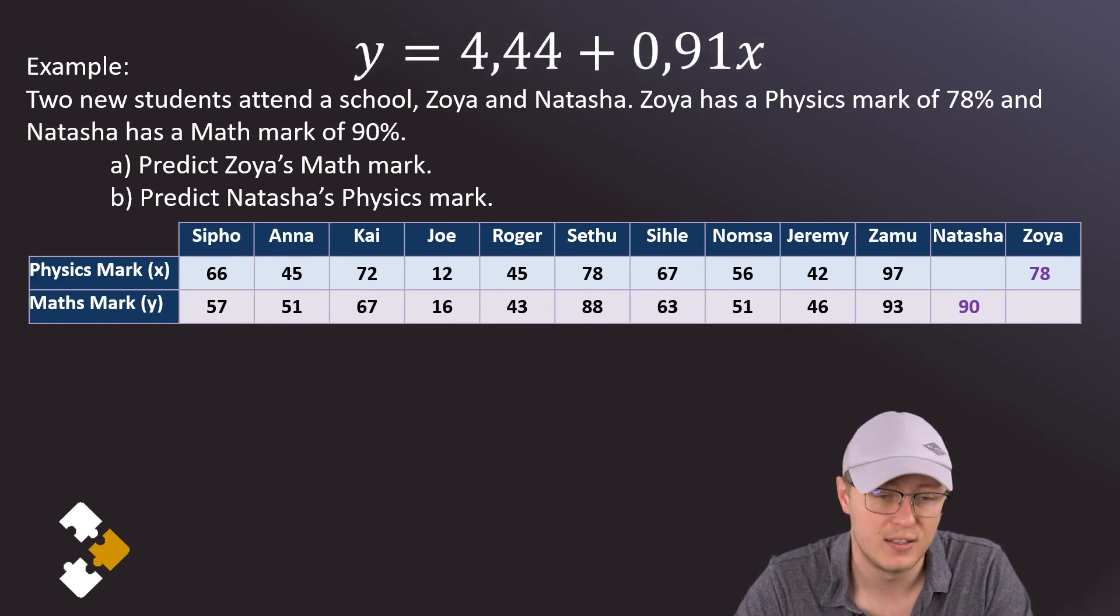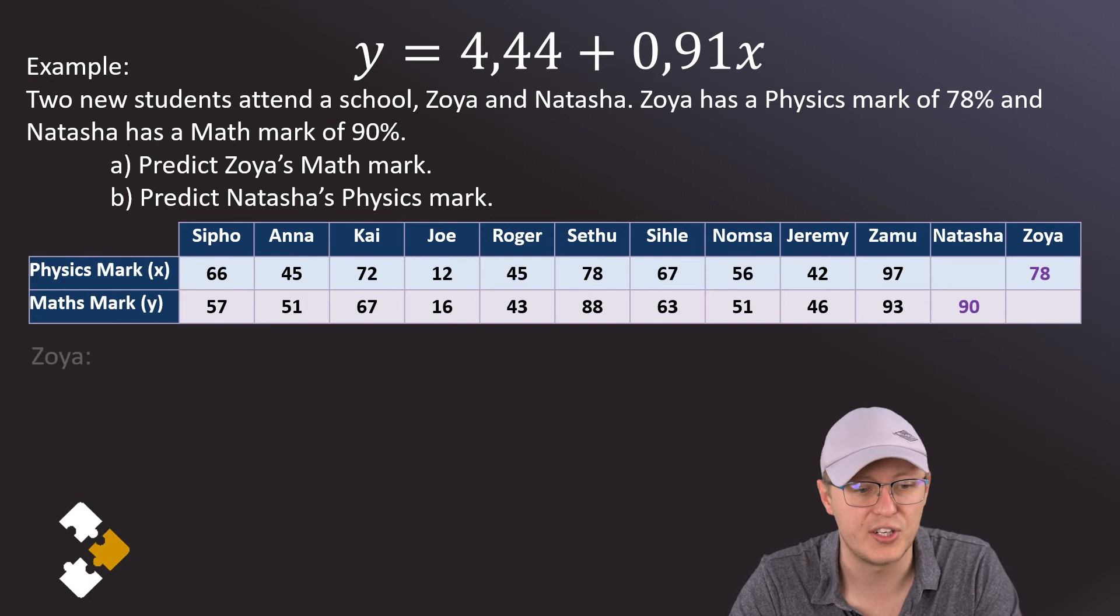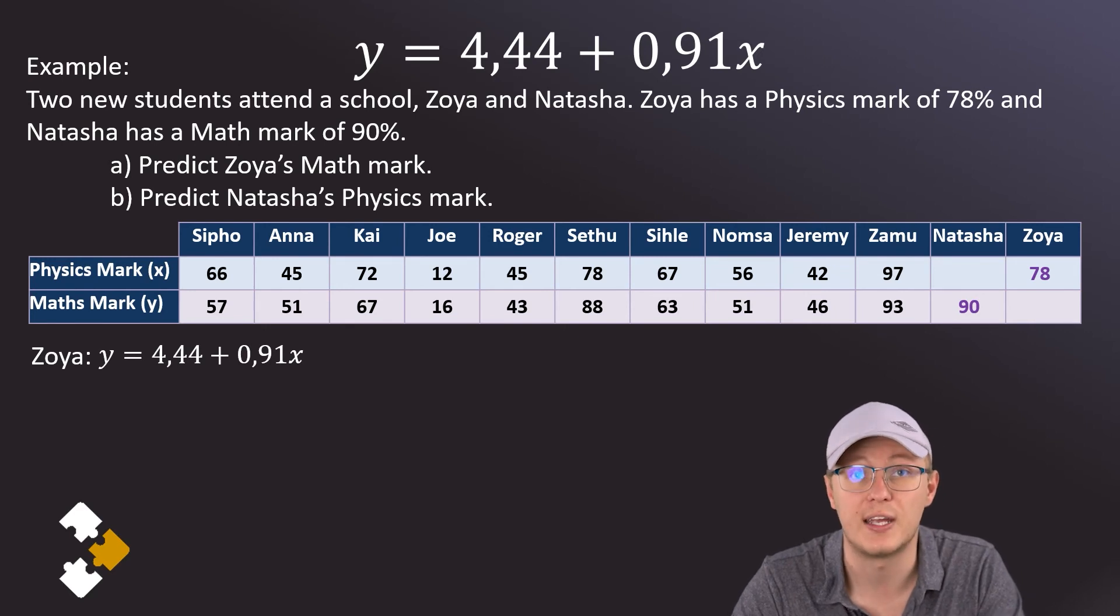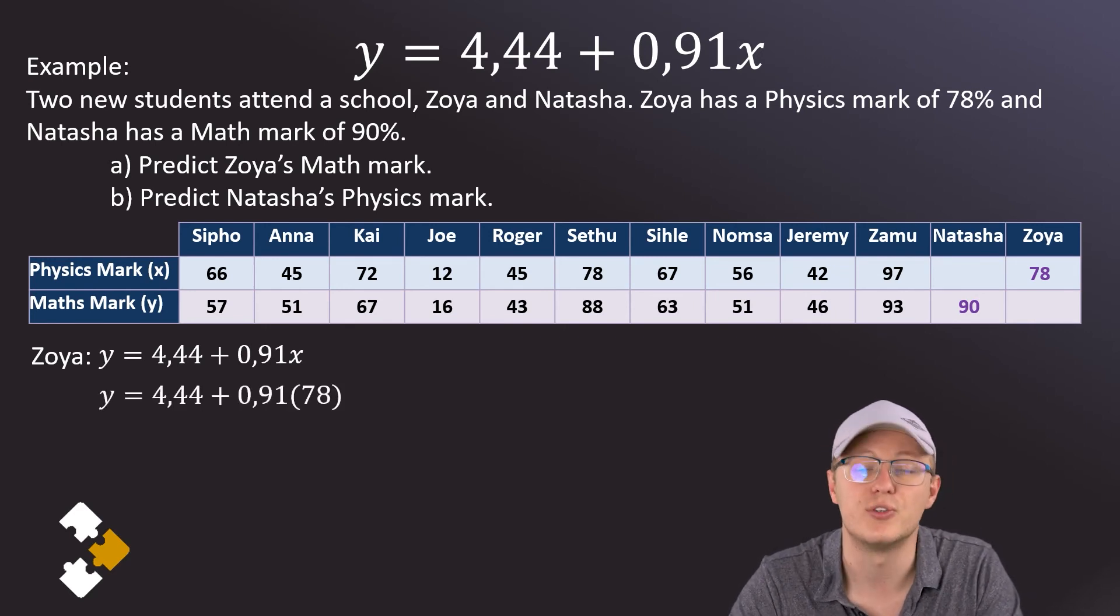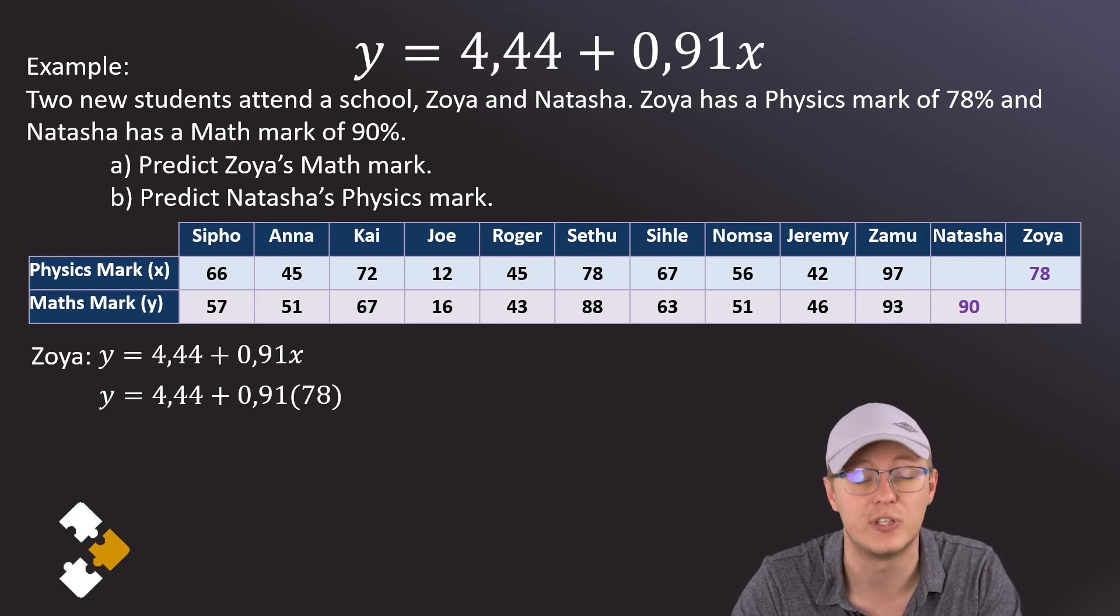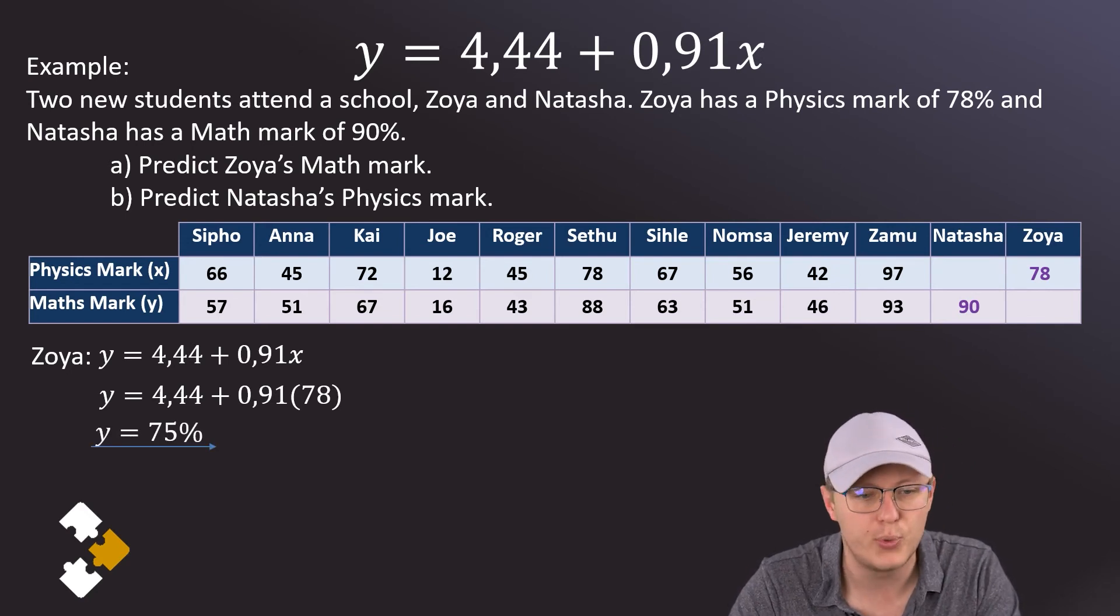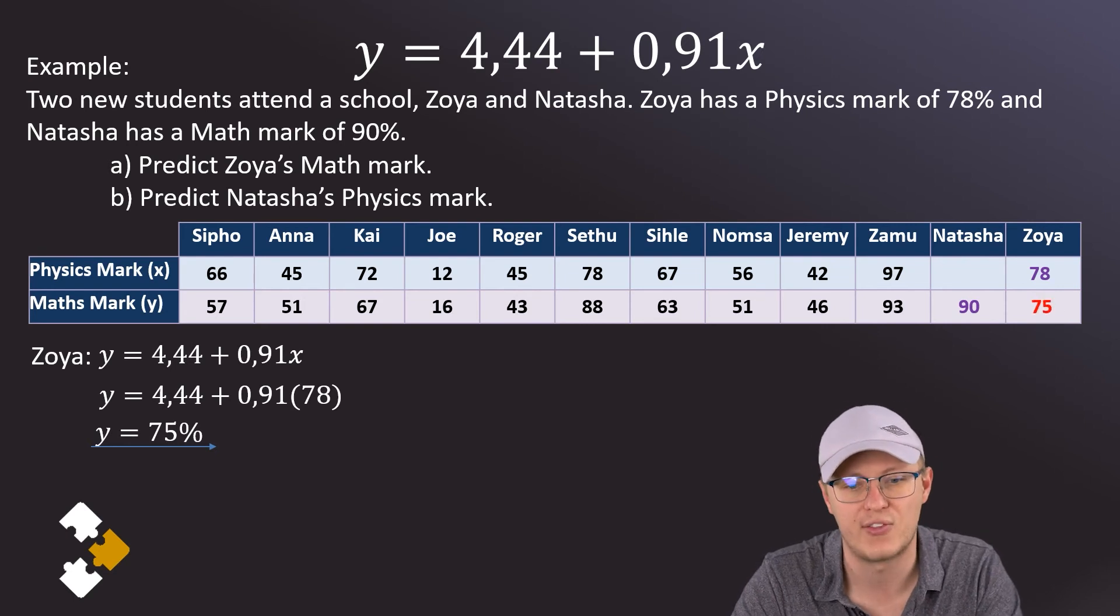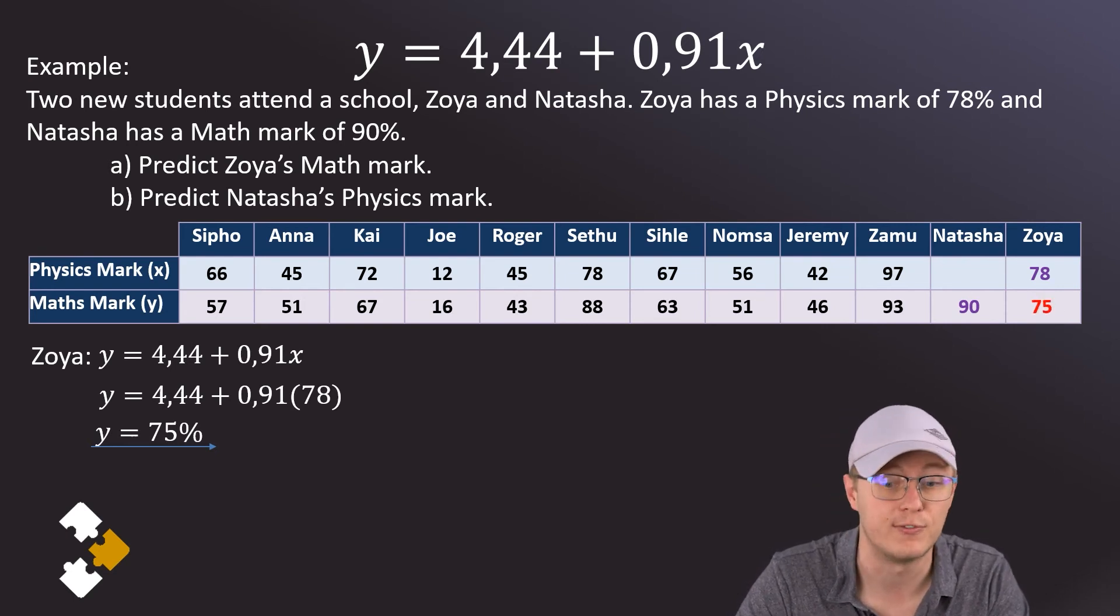Okay, so in comes our least squares regression line. We're going to use it in order to make a prediction. So for Zoya, we know that her physics mark, the x value, is 78. So all we do is we substitute that 78 into our formula for the least squares regression line, and that allows us to calculate a corresponding y value. So our prediction here is that since Zoya gets 78 for physics, she's likely to get 75 for math. So we can go and enter that as our predicted value in the table.